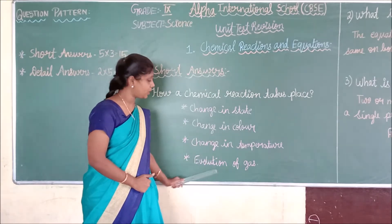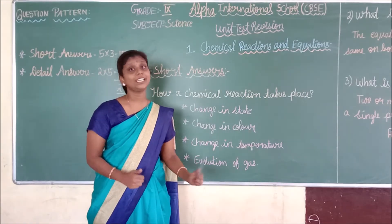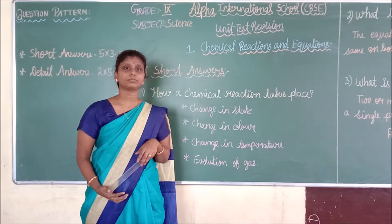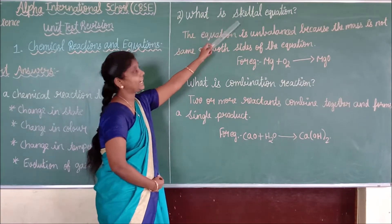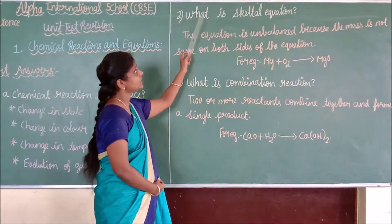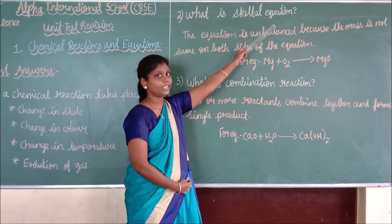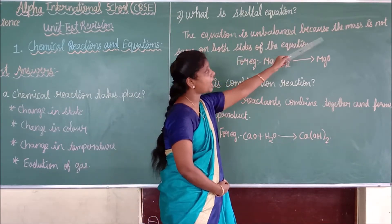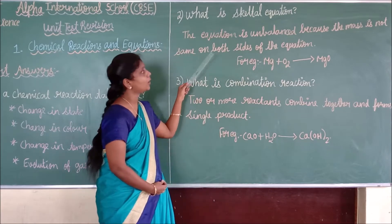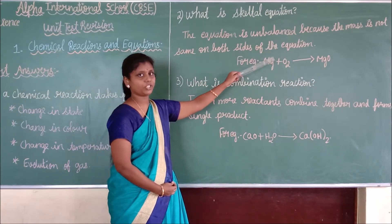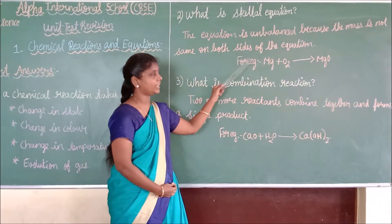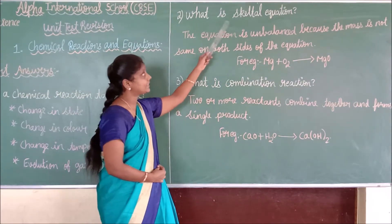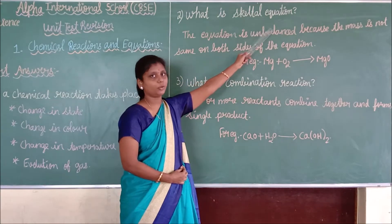Change in temperature and evolution of gas were discussed in activity 1.3. Next, what is a skeletal equation? An equation is unbalanced because the mass is not the same on both sides of the equation. When the mass is not balanced in an equation, we call that equation a skeletal equation.